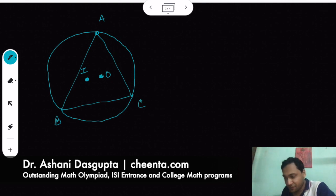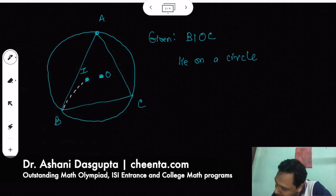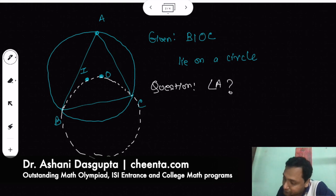Circumcenter O of the triangle, and we have the incenter I of the triangle. And it is given that B, I, O, C lie on a circle. So you can draw a circle like this through B, I, O, C. If I complete it, it will look like this. The question is: what is angle A?